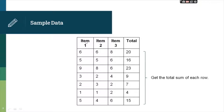We have three items: the first column is item 1, second column is item 2, third column is item 3. The first step is to get the total for each row: 6+6+8=20, 5+5+6=16, 9+8+6=23, 3+2+4=9, 2+3+2=7, 1+1+2=4, and 5+4+6=15.